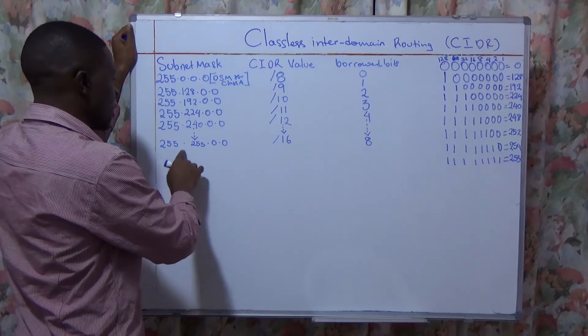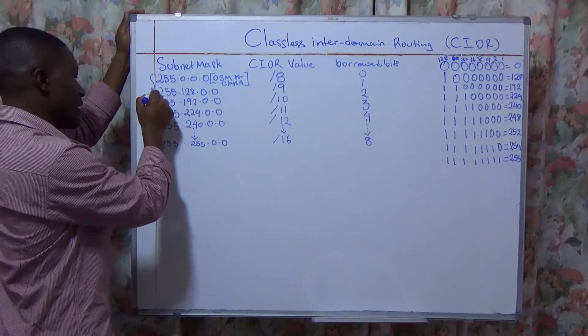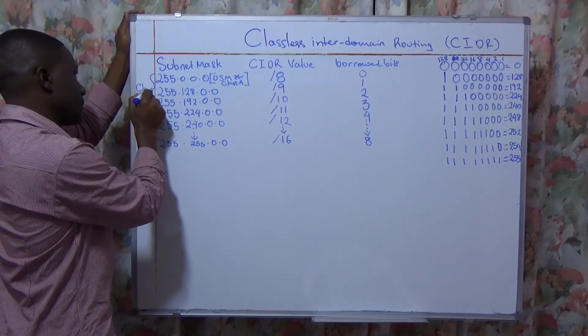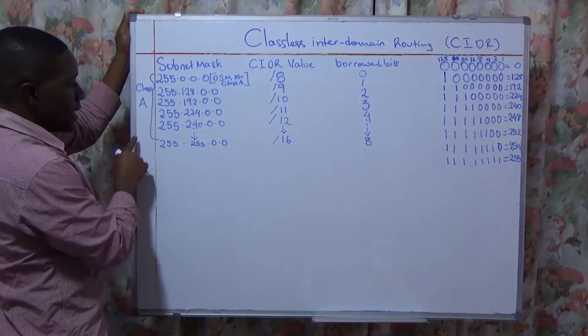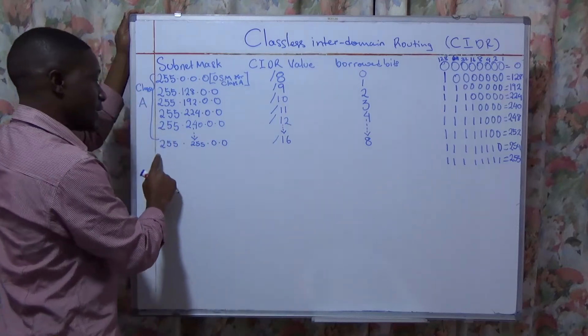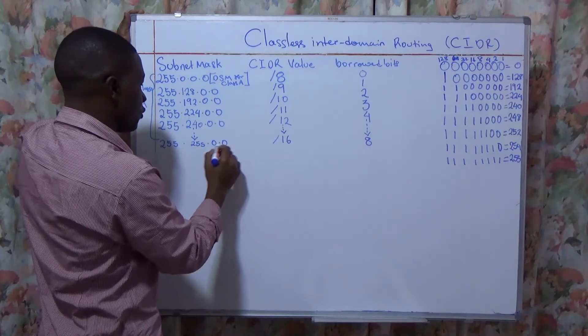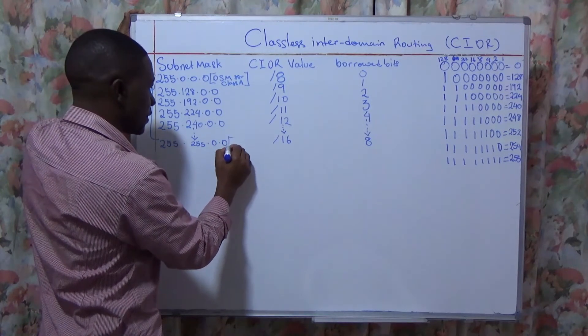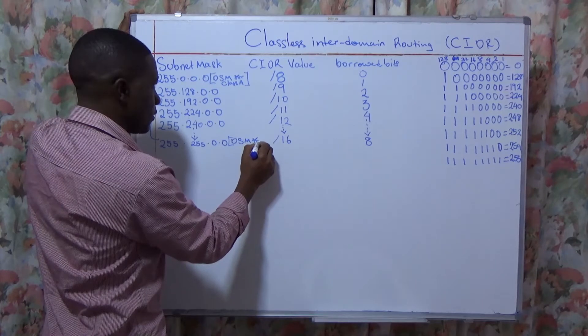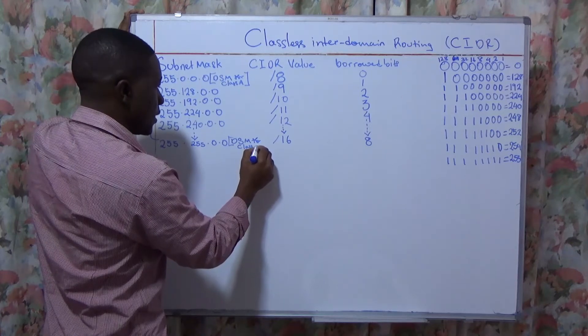And this will introduce us to Class B because this will be under Class A. Now under Class A it will go up to /15. And at Class B we are seeing the default subnet mask for Class B is 255.255.0.0, which is the default subnet mask for Class B.